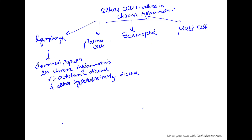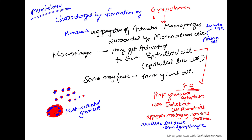Other cells involved in chronic inflammation include lymphocytes, plasma cells, eosinophils, and mast cells. Lymphocytes are the dominant population when chronic inflammation is due to autoimmune or hypersensitivity diseases. The morphology usually shows mononuclear cell infiltration, and we can also see formation of granulomas. A granuloma is a microscopic aggregation of activated macrophages in the center surrounded by mononuclear cells like lymphocytes or plasma cells. These macrophages can become epithelioid cells (epithelial-like cells), and some may fuse into giant cells. This is shown in the diagram, and that covers chronic inflammation.